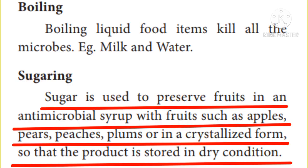Sugaring: Sugar is used to preserve fruits in an antimicrobial syrup with fruits such as apples, pears, peaches, and plums, or in a crystallized form, so that the product is stored in dry condition.